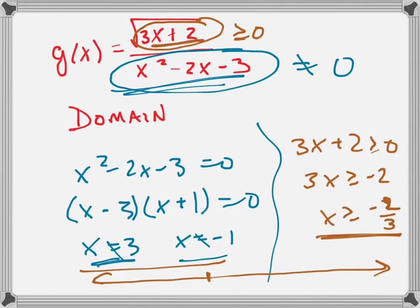Here's negative 2 thirds, like just short of negative 1. And here's negative 1. And here's positive 3.